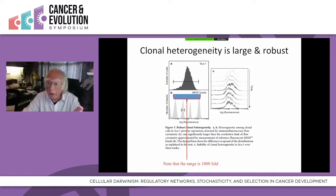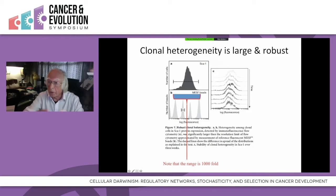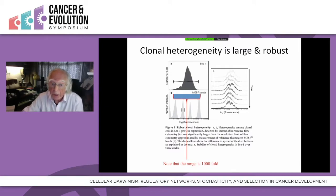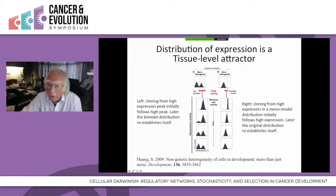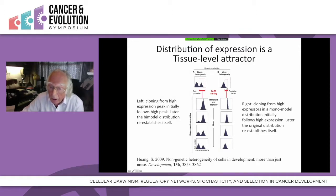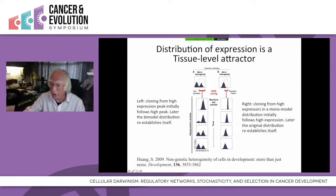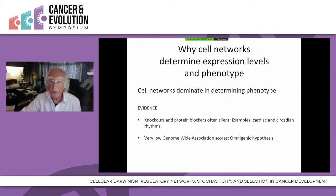The next important point is that this is not a property of the cells themselves; it's a property of the population. If you study it over a whole week, the attractor — the way in which the population as a whole determines the distribution of expression levels — stays exactly the same. Furthermore, if you clone from high expression levels, they will initially show the same high expression as the parent cells, but over just a few days the whole population reverts to the distribution. This is the evidence for a population attractor.